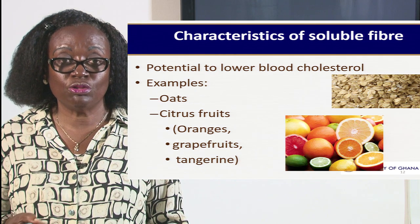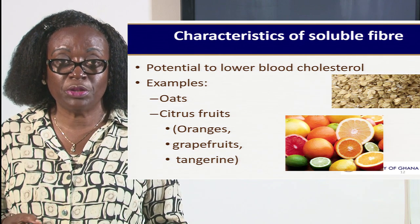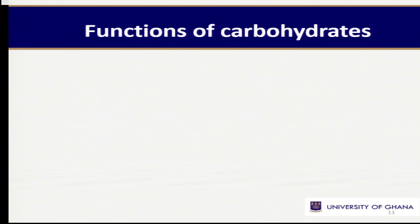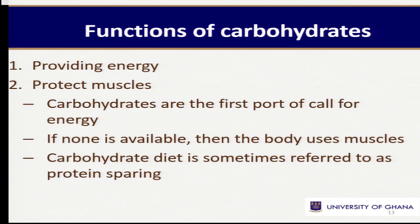Other foods that are also good sources of soluble fiber include citrus fruits — oranges, grapefruits, tangerine, lemons, lime — they are all good sources of citrus fruit that we can use. They contain a lot of soluble fiber that has a role to prevent us from getting high blood cholesterol.